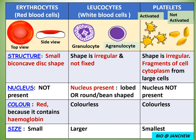Let us now discuss the three cellular components of blood: the erythrocytes or red blood cells, the leukocytes or white blood cells, and the platelets. Erythrocytes and leukocytes are cells, but platelets are just fragments of cells.